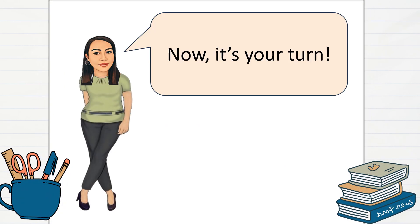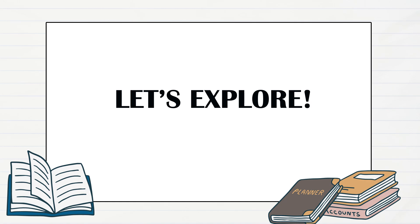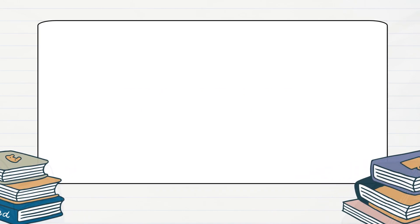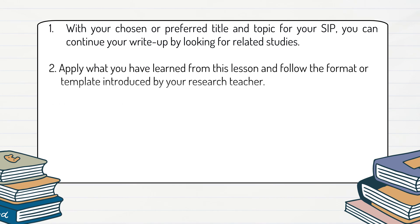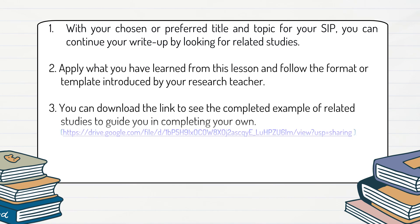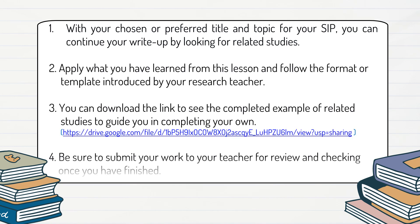Now it's your turn. Let's explore. One, with your chosen or preferred title and topic for your SIP, you can continue your write-up by looking for related studies. Two, apply what you have learned from this lesson and follow the format or template introduced by your research teacher. Three, you can download the link to see the completed example of related studies to guide you. Four, be sure to submit your work to your teacher for review and checking once you have finished.